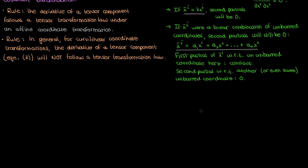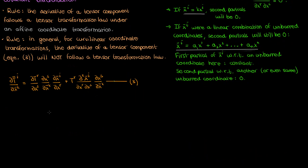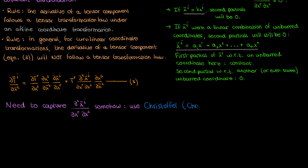Speaking of equation 3 — because this mixed second partial term throws such a huge wrench into establishing a tensor transformation law for the derivative of a tensor, we need some quantity to capture this term. And to establish that quantity we need to talk about the Christoffel symbols. In the next video I'm going to introduce the Christoffel symbols and show how we can use them to absorb this mixed partial derivative term and end up with a quantity that involves the partial derivative of a tensor component — but now this quantity will, without fail, transform like a tensor.